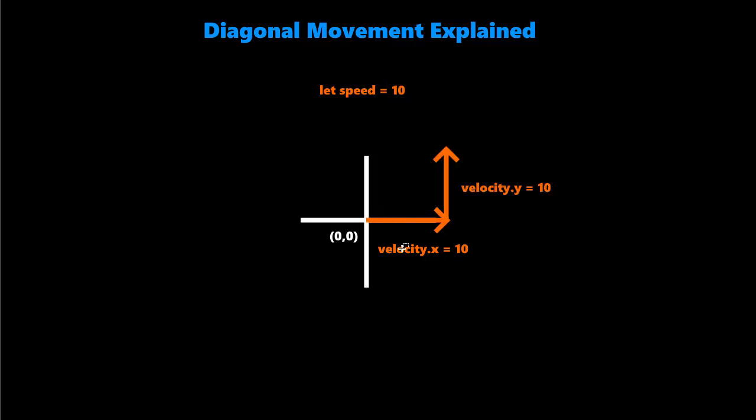But if we were to move diagonally up and we set velocity.x and .y equal to the speed 10 and 10, then we're really moving on this diagonal line here. So what actually is the length of this diagonal line? Because it's clearly not 10.